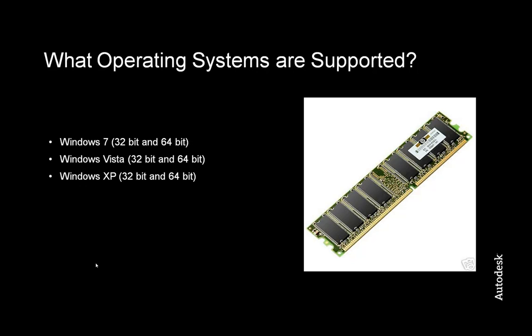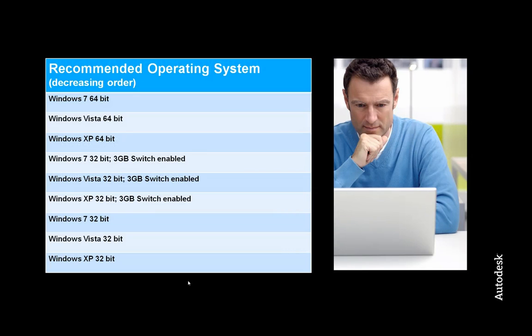What operating systems are supported? We have Windows 7, Windows Vista, and Windows XP in both 32 and 64-bit versions of each. However, just because they are supported does not mean they will all perform equally. Here you will see a chart that lists out the operating systems in recommended order. You will notice that Windows 7 64-bit is going to be the ideal operating system, whereas XP 32-bit is at the bottom of the list. Unfortunately, this is where we still see most of our users. All of the 64-bit versions are at the top, followed by the 32-bit versions with the 3GB switch enabled, and lastly the plain 32-bit versions. Ideally, we would be seeing more people making the jump to Windows 7 64-bit, as there is a huge increase in performance compared to XP 32 with only 4GB installed.